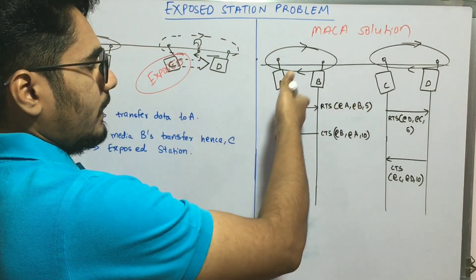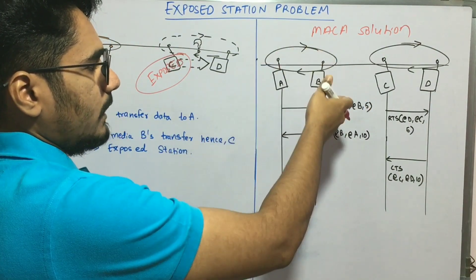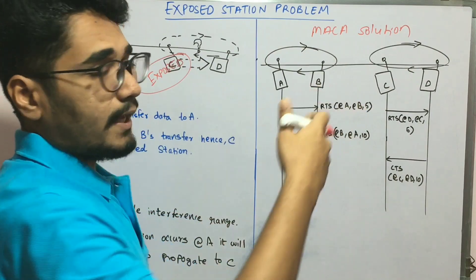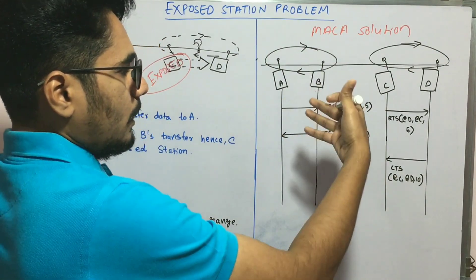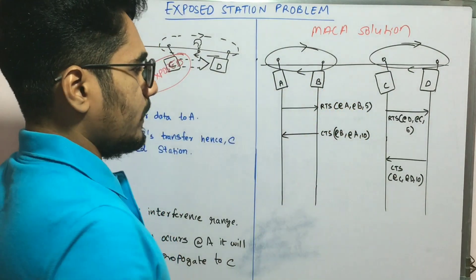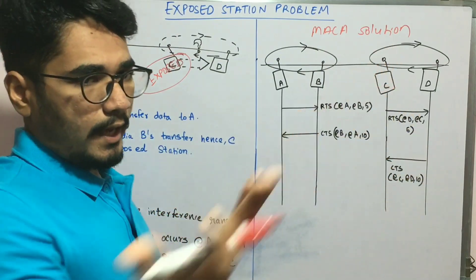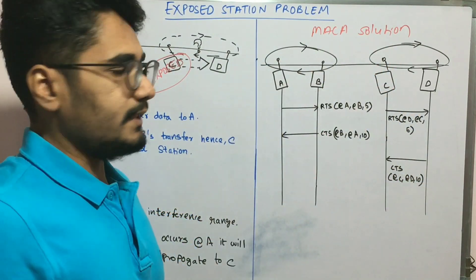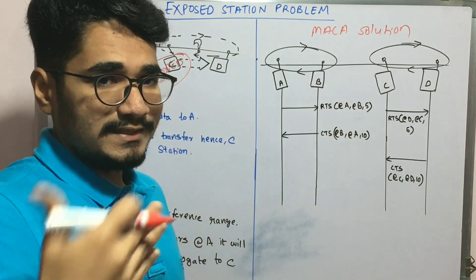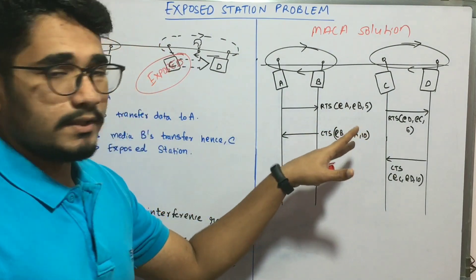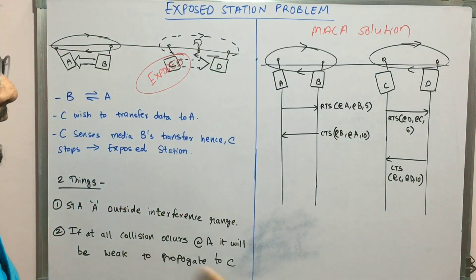A gives an RTS signal with the address of recipient, address of sender, and the future transmission duration. In acknowledgement, B to A will send a CTS signal with the sender and recipient addresses and the time duration for communication.